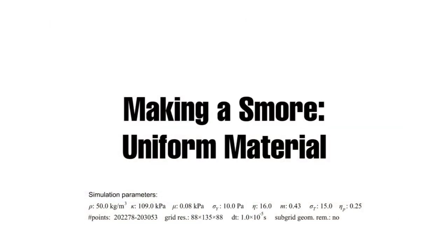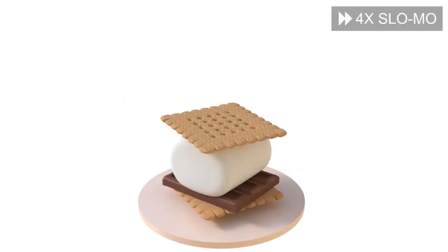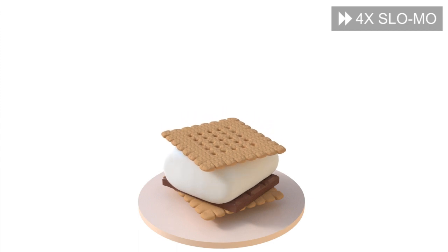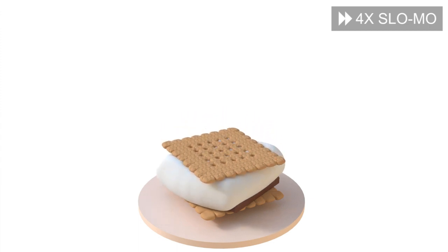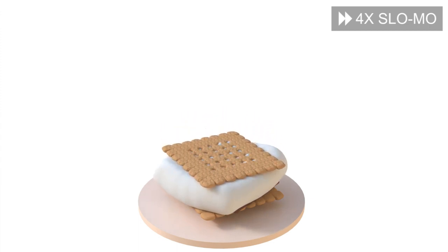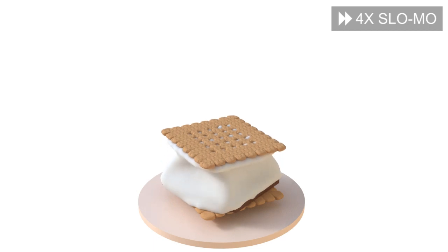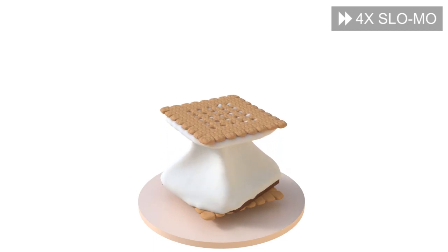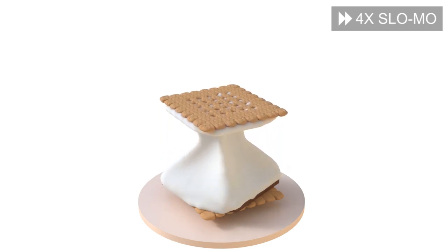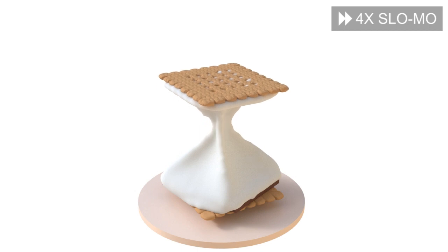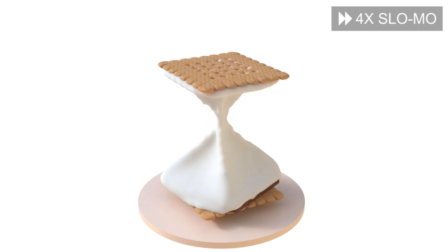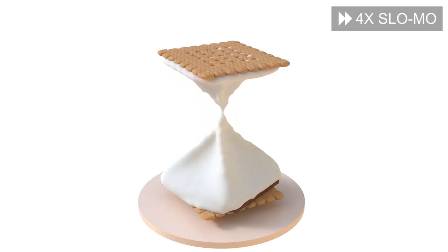We will now show examples simulated using our method. We simulate a s'more by squeezing a marshmallow between two graham crackers and a piece of chocolate. As we compress the marshmallow, it begins to deform and flow, eventually seeping through the holes in the graham cracker. As we lift up the cracker afterwards, the marshmallow exhibits a necking behavior and eventually tears.